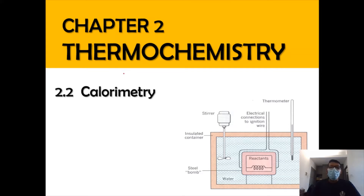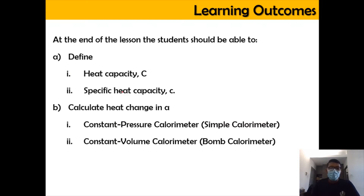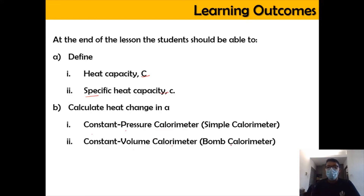Hi, Assalamualaikum and a very good morning. We are still in Chapter 2, Thermochemistry, currently in section 2.2 Calorimetry. In this video, we're going to learn the definition of heat capacity and specific heat capacity, look into heat change in a constant pressure calorimeter or simple calorimeter, and the constant volume calorimeter or bomb calorimeter. We'll also do some calculations regarding heat capacity and specific heat capacity.